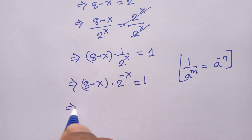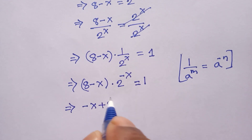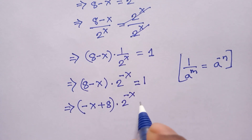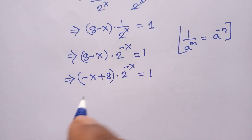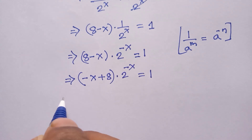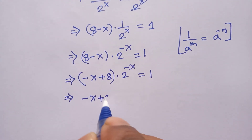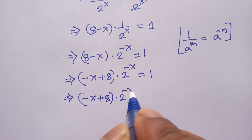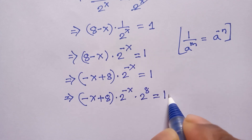Rearranging, we have (−x + 8) times 2^(4 minus x) equals 1. To solve this, we multiply both sides by 2^(4·8), therefore (−x + 8) times 2^(4 minus x) times 2^(4·8) equals 1 times 2^(4·8).